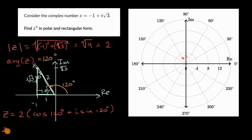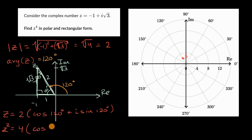Now, what would z squared be? When you multiply complex numbers represented in polar form, you multiply the moduli — so it would be two squared, giving four — and you add the arguments, essentially rotating z by another 120 degrees. So z squared equals four times cosine of 240 degrees plus i sine of 240 degrees. Two times two is four, and 120 degrees plus another 120 degrees is 240 degrees.